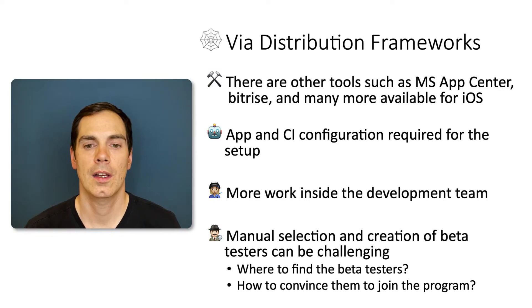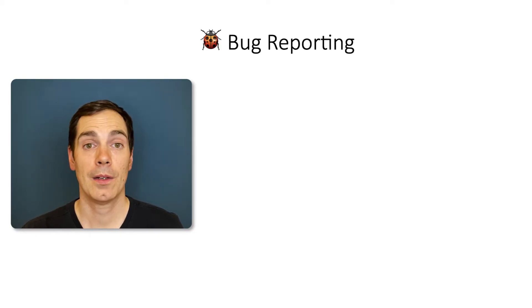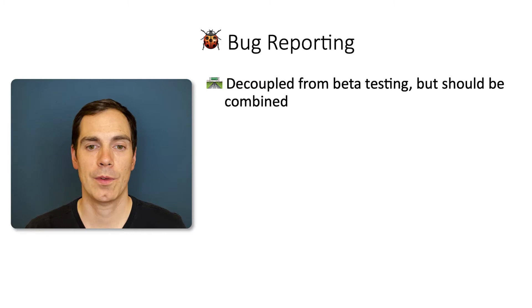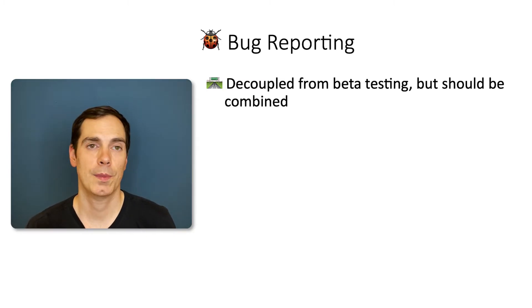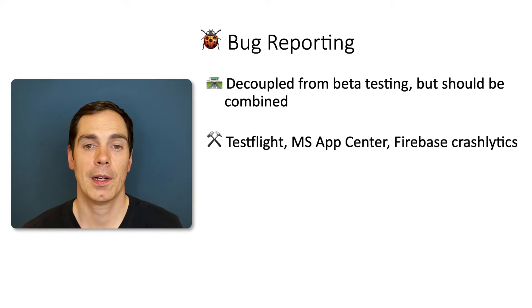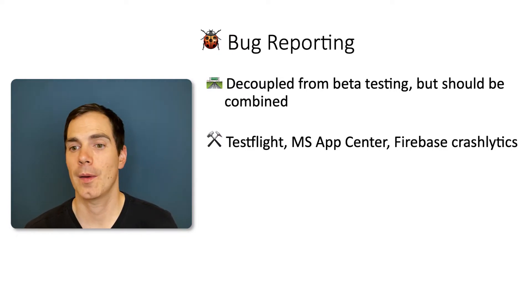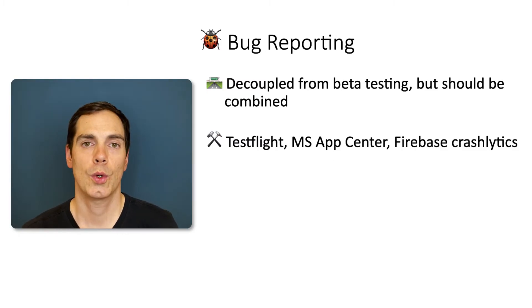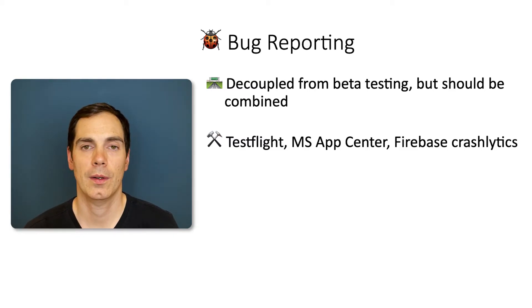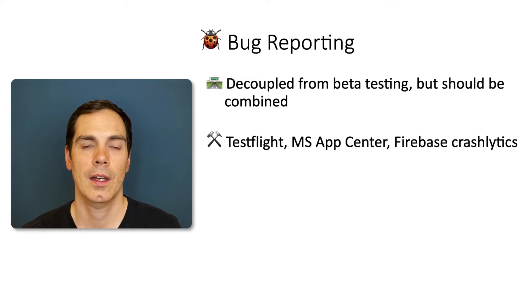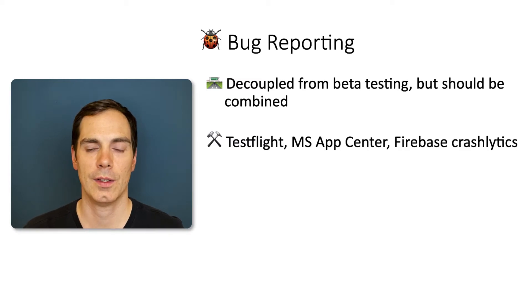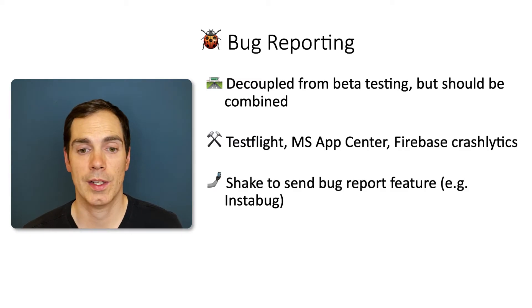Bug reporting should be decoupled from but combined with beta testing. Tools and libraries like TestFlight, App Center, or Firebase Crashlytics can be integrated into your beta or production apps. These provide crash logs, warning logs, usage statistics, and in case of an error, the steps the user took. You get detailed crash and error reports to understand what happened in the app.